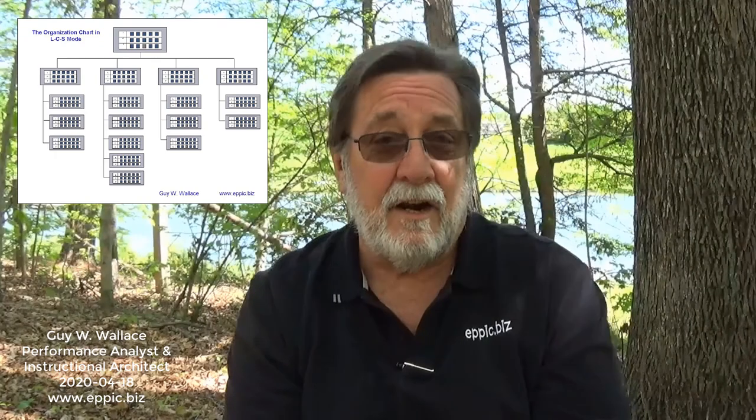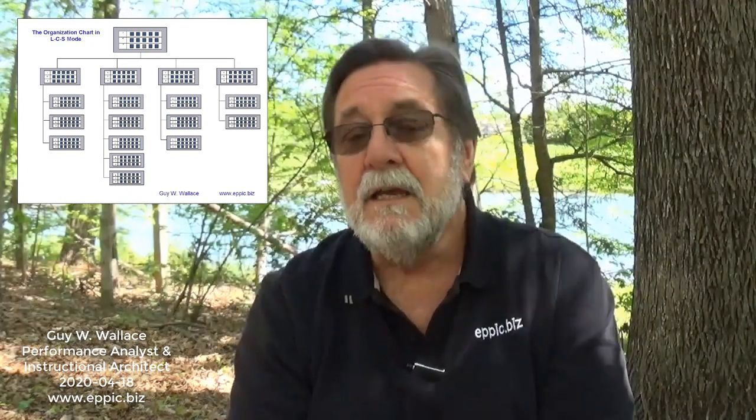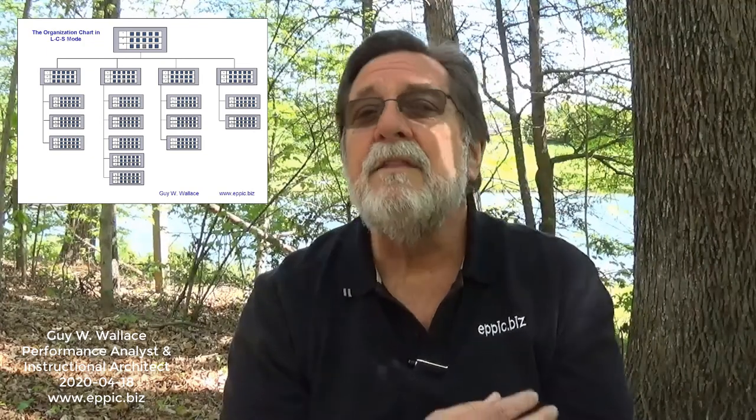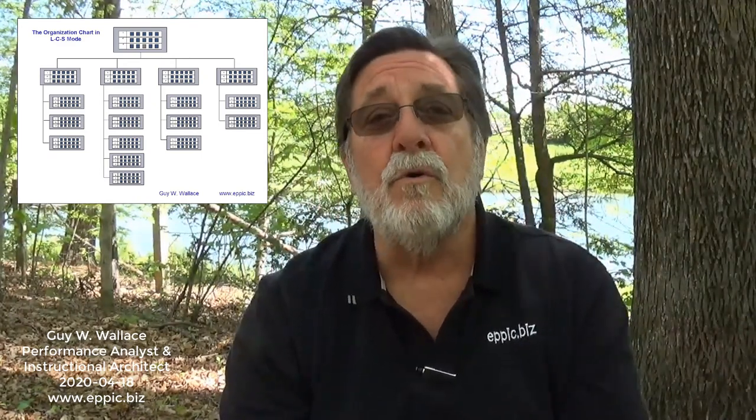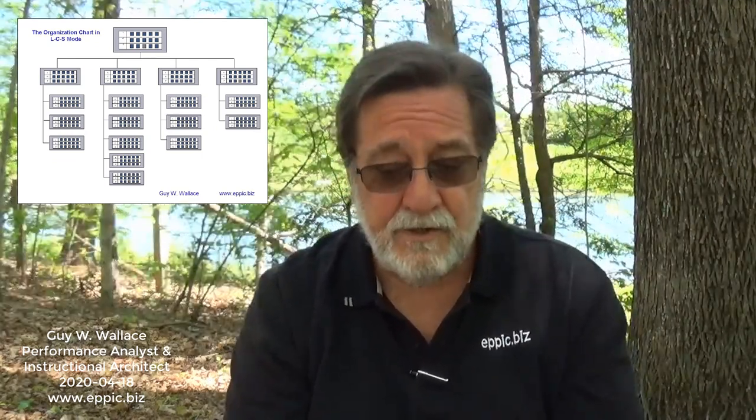At level one is an organization chart representative of the processes that are owned and supported. For each level of the organization, each organizational unit or entity has a little model capturing three levels: the leadership, core, and support processes of managers. Within the core processes are processes either owned by the organizational entity itself or supported by it. One needs to be cognizant of all of that.